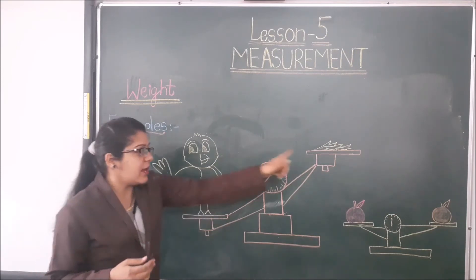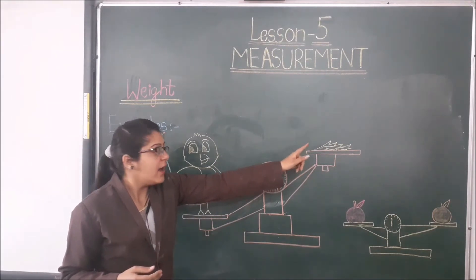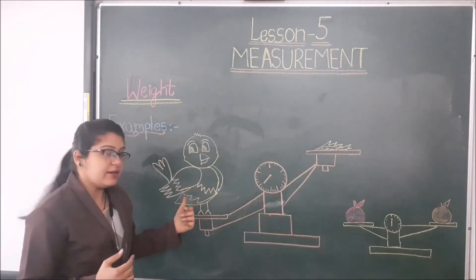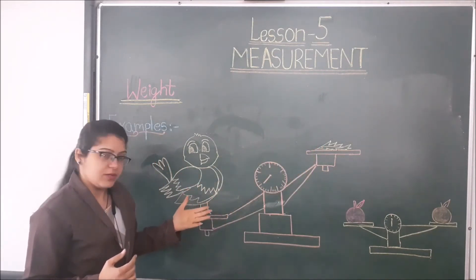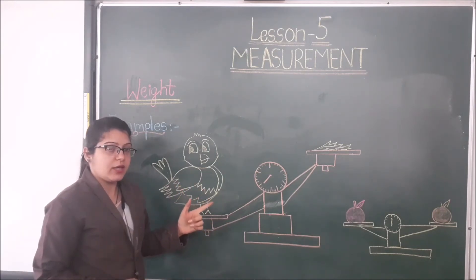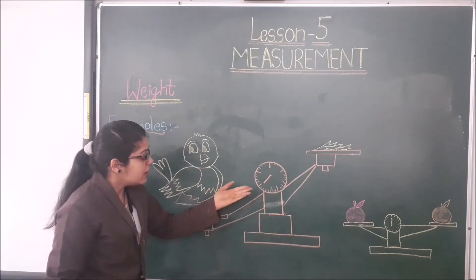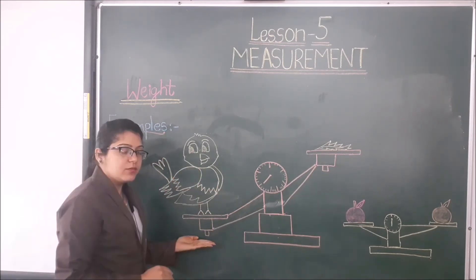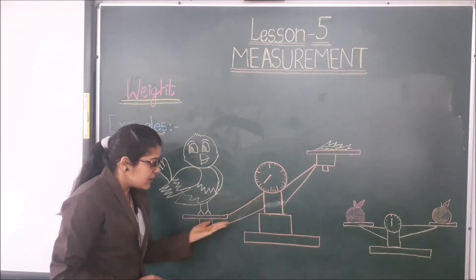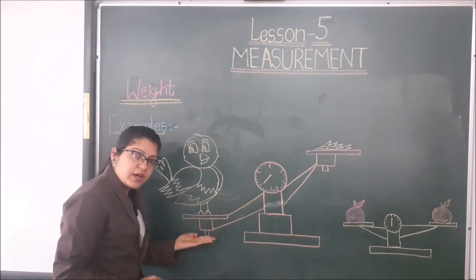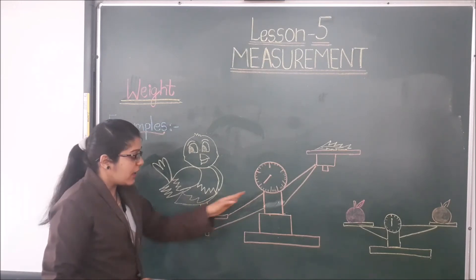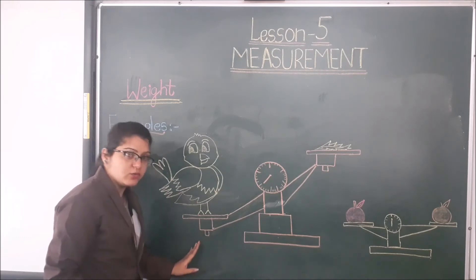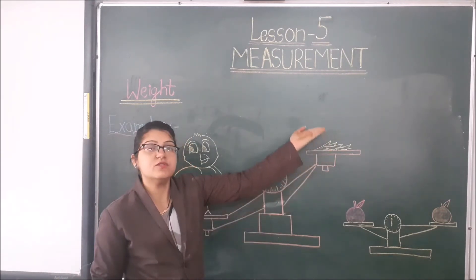We can say: the bird is heavier than a feather, and a feather is lighter than a bird. One important thing to remember: the heavier side of the measuring scale always moves down, and the lighter side always moves up.